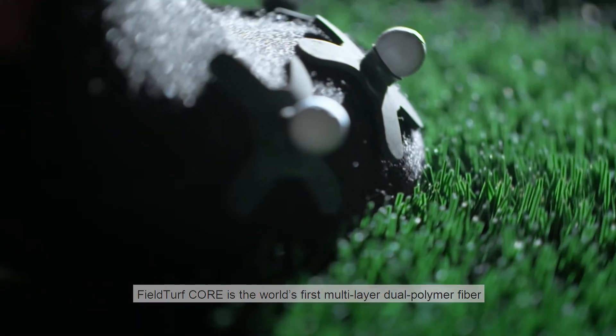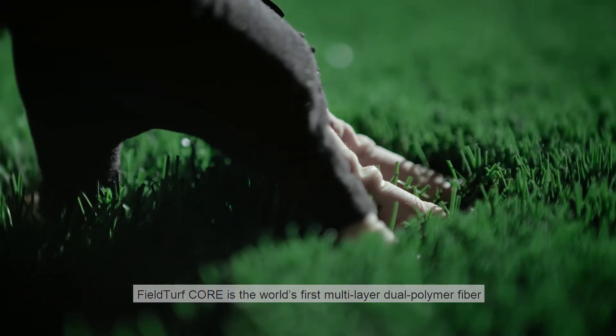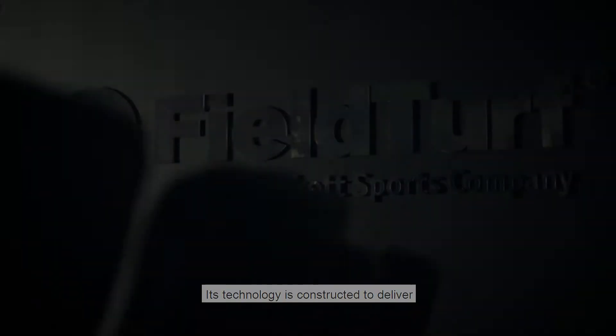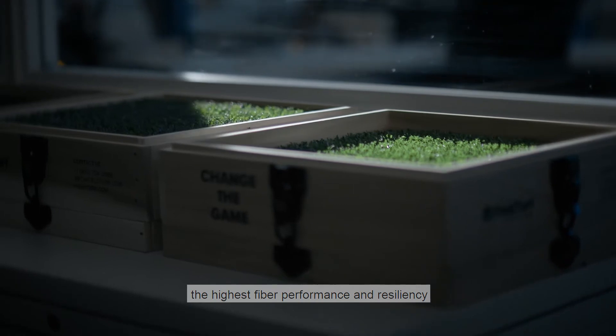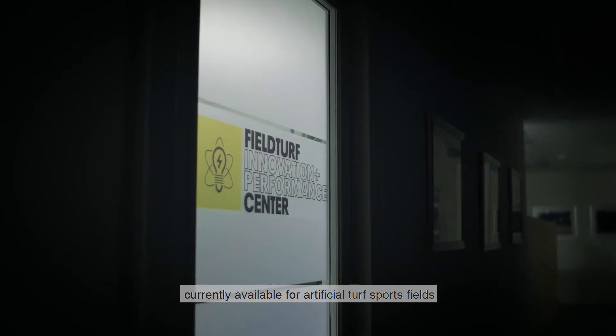FieldTurf Core is the world's first multi-layered dual polymer fiber. Its technology is constructed to deliver the highest fiber performance and resiliency currently available for artificial turf sports fields.